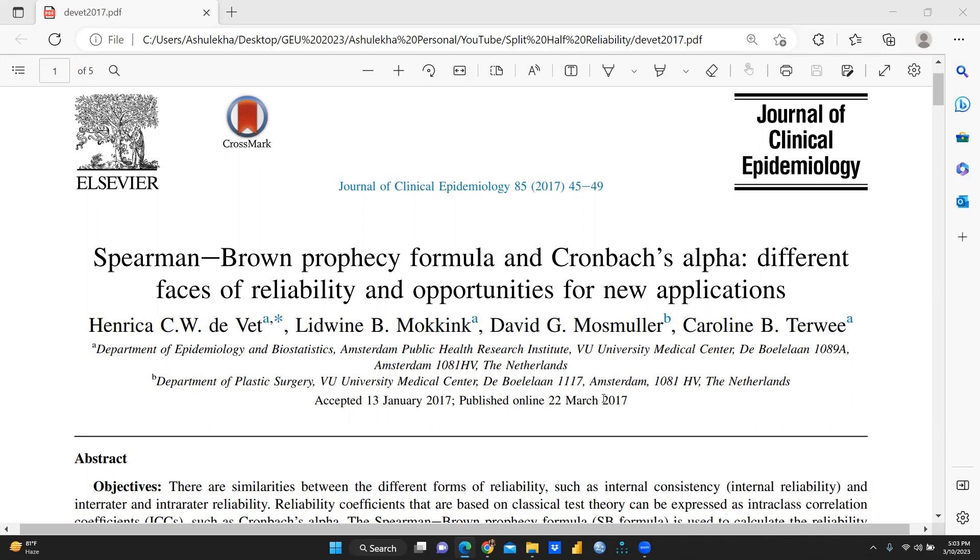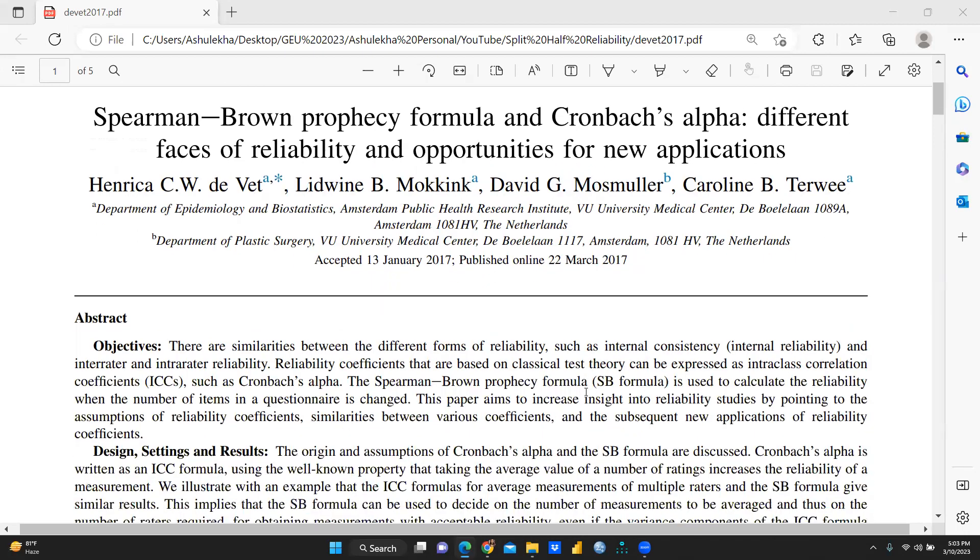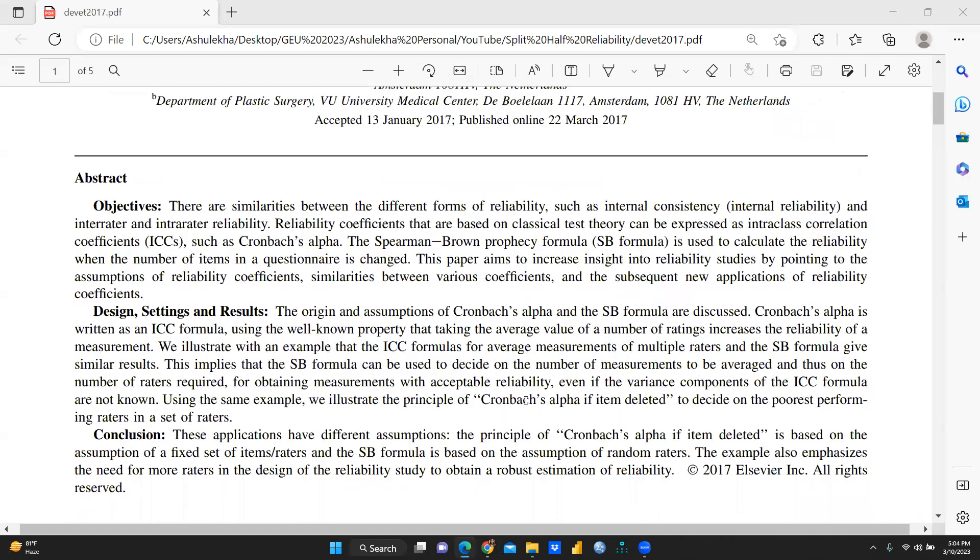So when you are working on Spearman-Brown prophecy formula and Cronbach's alpha, you could understand what is exactly the criteria, what exactly the points where we have to apply Spearman-Brown prophecy formula and Cronbach's alpha and what is the difference between both these formulas. So here is the abstract. You can see what are the objectives behind this, why this particular paper has been written, design, setting and results and Cronbach's alpha.